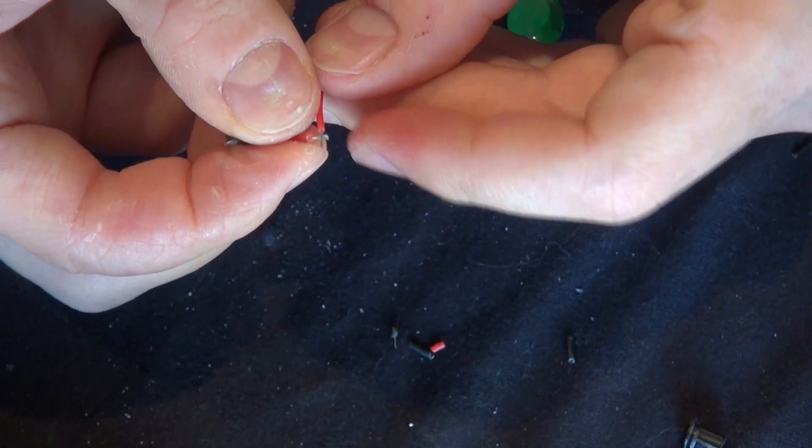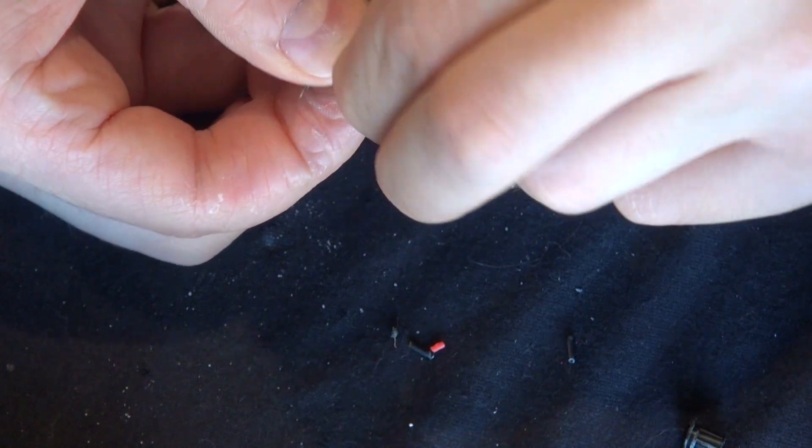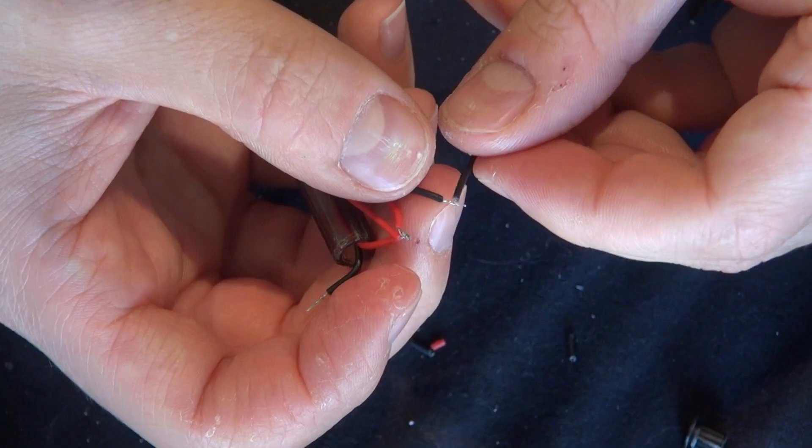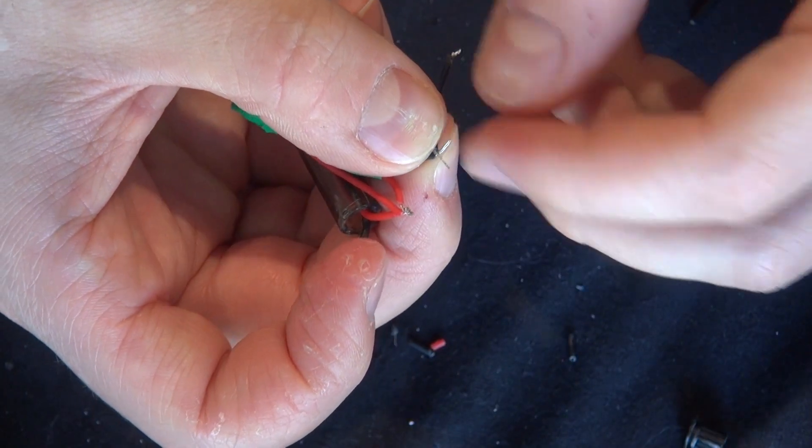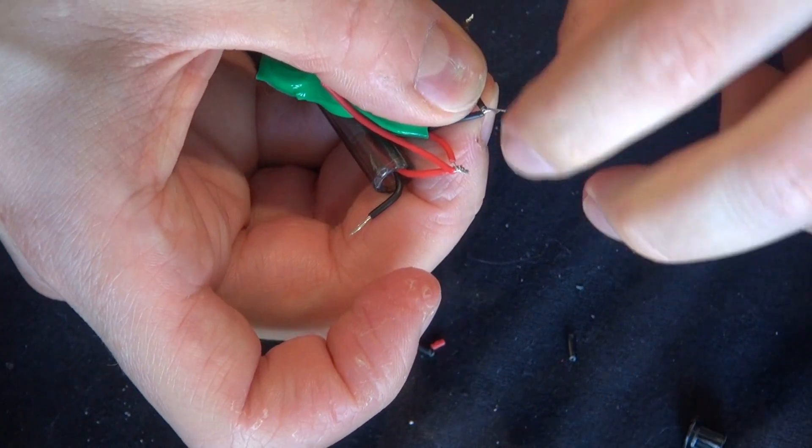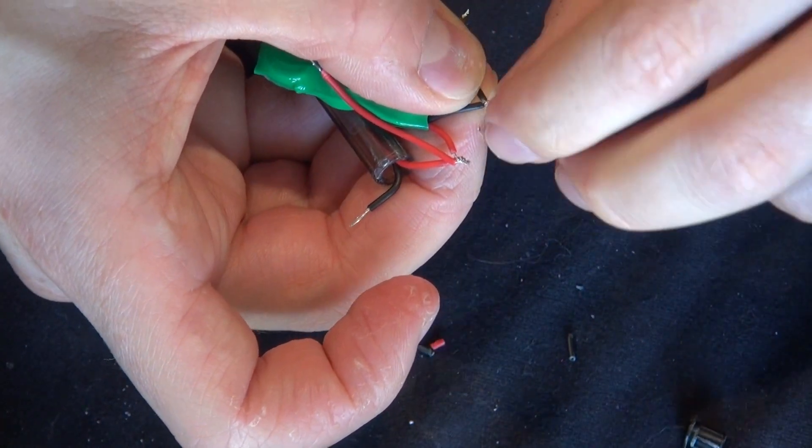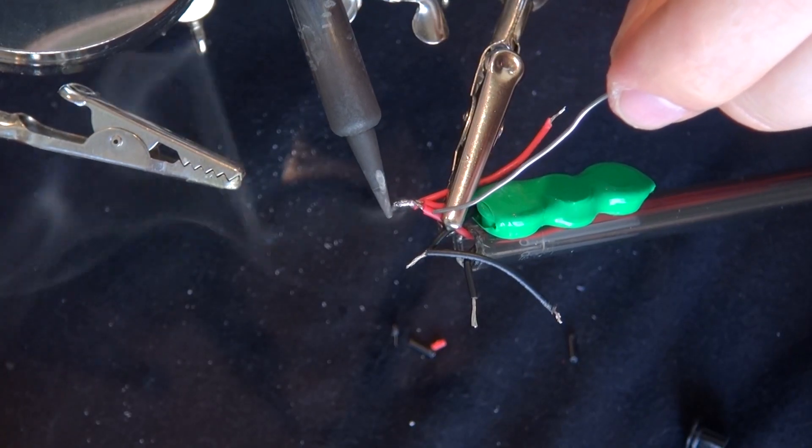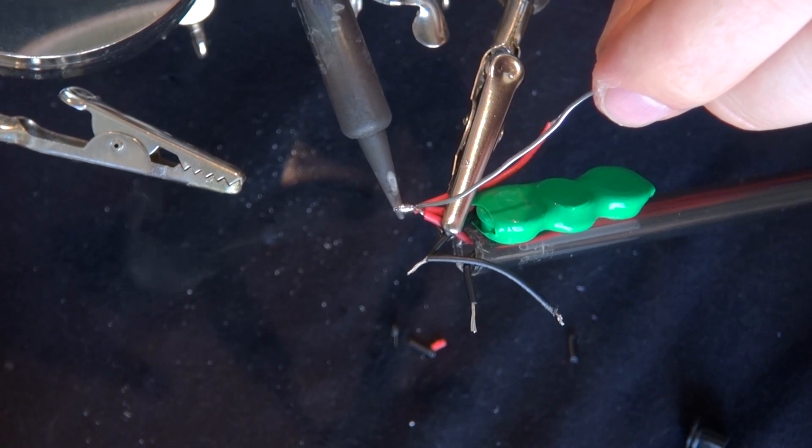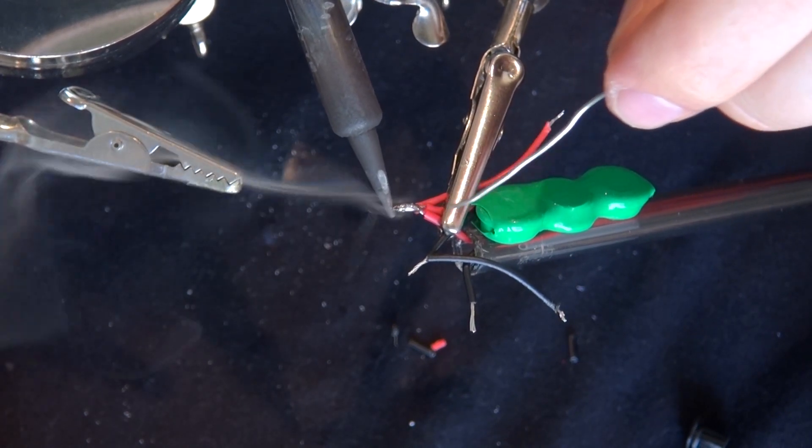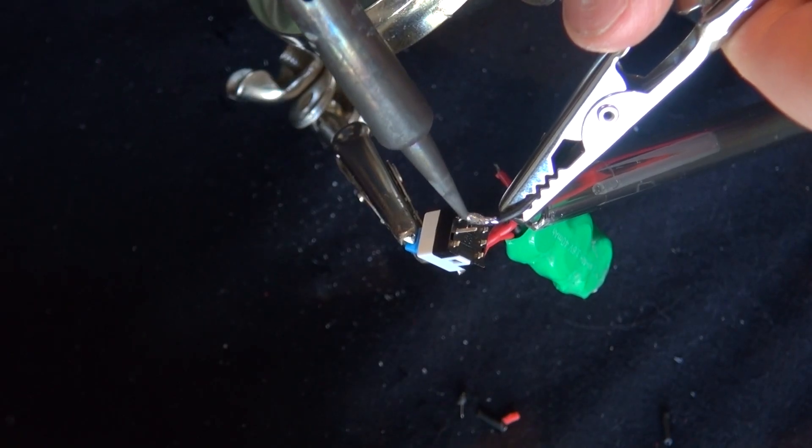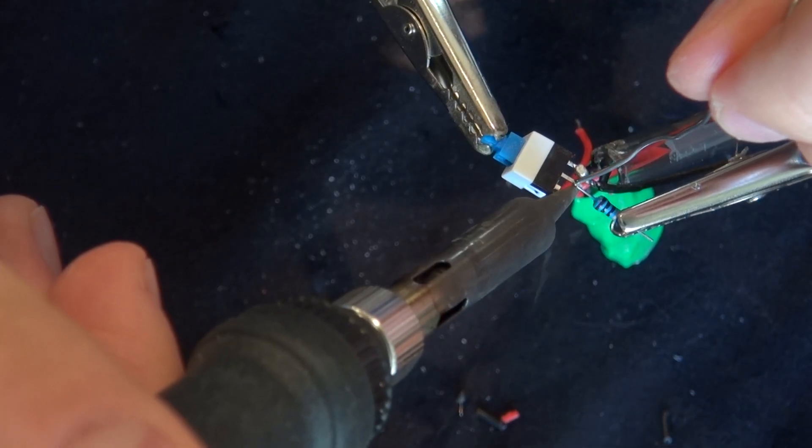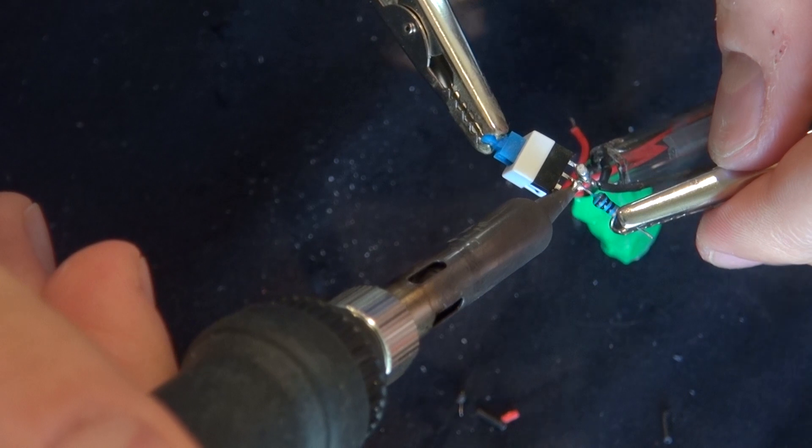Remove the insulation on both wires, then solder them into place. Now solder the negative lead to your press button switch. Solder the 10 ohm resistor just like that.